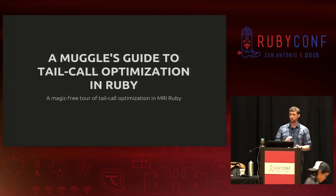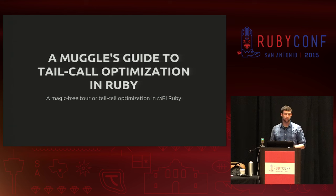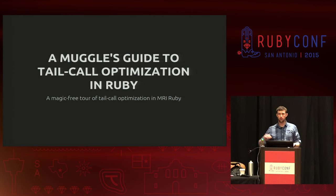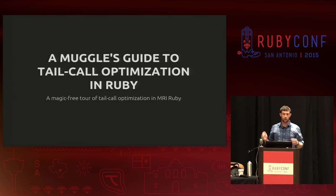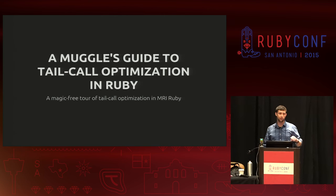Good morning, everybody. I'm going to try to start just a few seconds early because chances are I will go over time. I'd also like to give you guys an opportunity to ask questions in the event that you can't read any of the slides or anything like that, and be able to shout at me. Today my presentation is a muggle's guide to tail call optimization in Ruby.